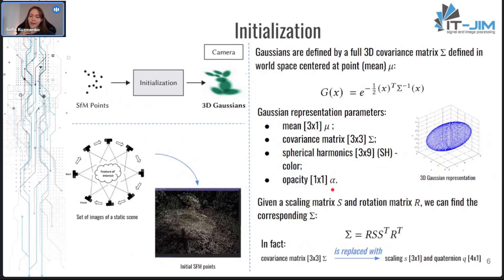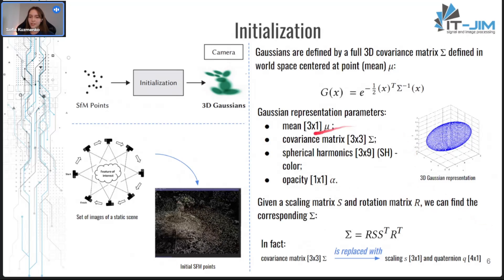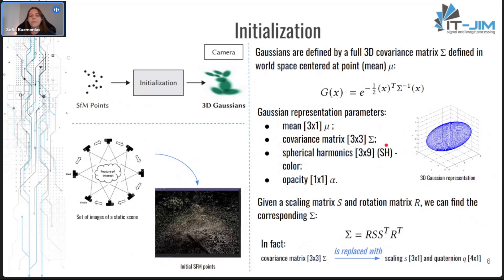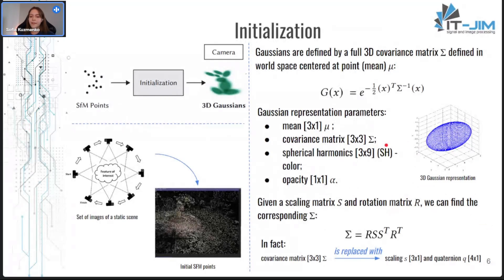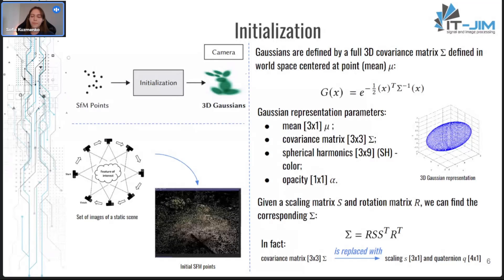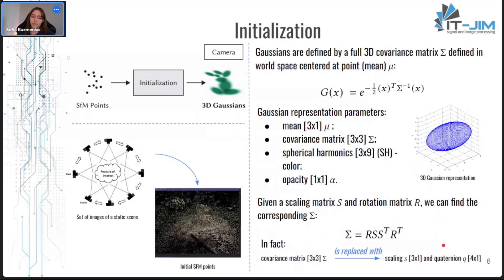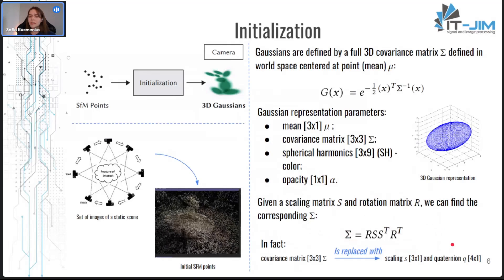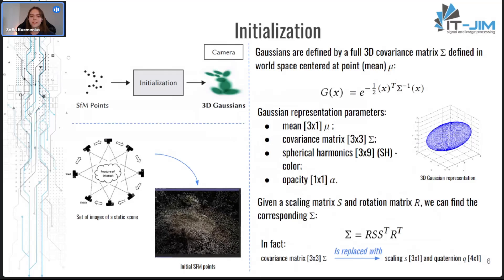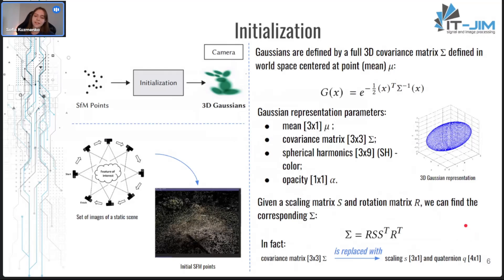In practice, they don't use a direct definition of the covariance matrix, because these matrices have physical meaning only if they are positive semi-definite. Therefore, they replaced it with a configuration of an ellipsoid — so they could basically call it ellipsoid splatting, but 3D Gaussians obviously sounds smarter.